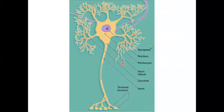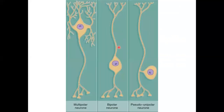The axon hillock is a swelling at the start of the axon. Nissl granules, present alongside the dendrites, contain the rough endoplasmic reticulum. Regarding types of neurons: pseudo-unipolar neurons have only one pole from which both the axon and dendrites arise. Multipolar neurons have many poles giving rise to dendrites, with the axon arising from a separate part.